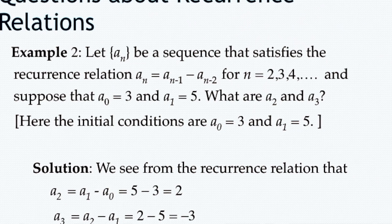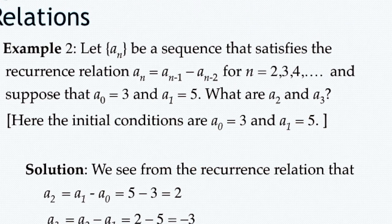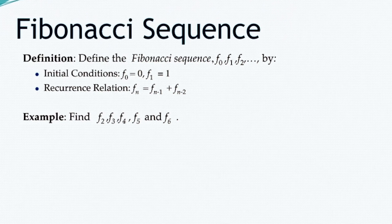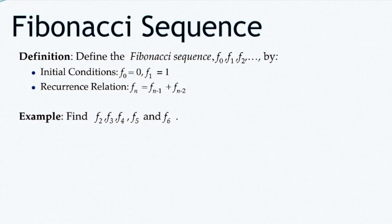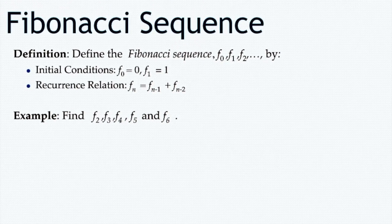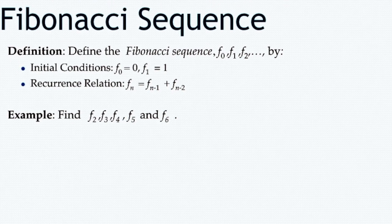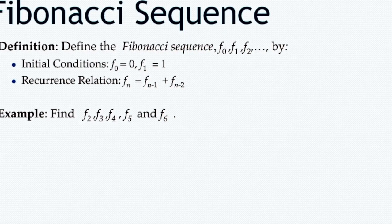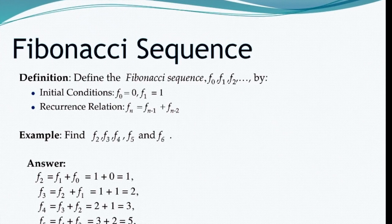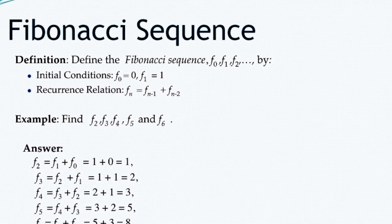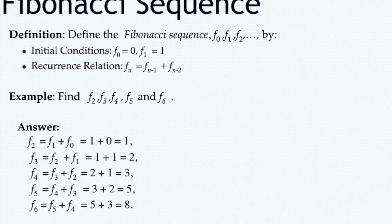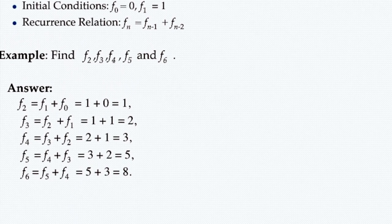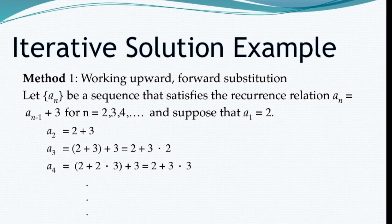Similarly, a3 = a2 - a1 = 2 - 5 = -3. A famous sequence studied in computer science for practicing recursion in any programming language is the Fibonacci sequence. In Fibonacci, we have f0, f1, f2, ... with initial conditions f0=0 and f1=1, and the recursion relation f(n) = f(n-1) + f(n-2). So f2 = f1 + f0 = 1+0 = 1, and f4 = f3 + f2 = 2+1 = 3.